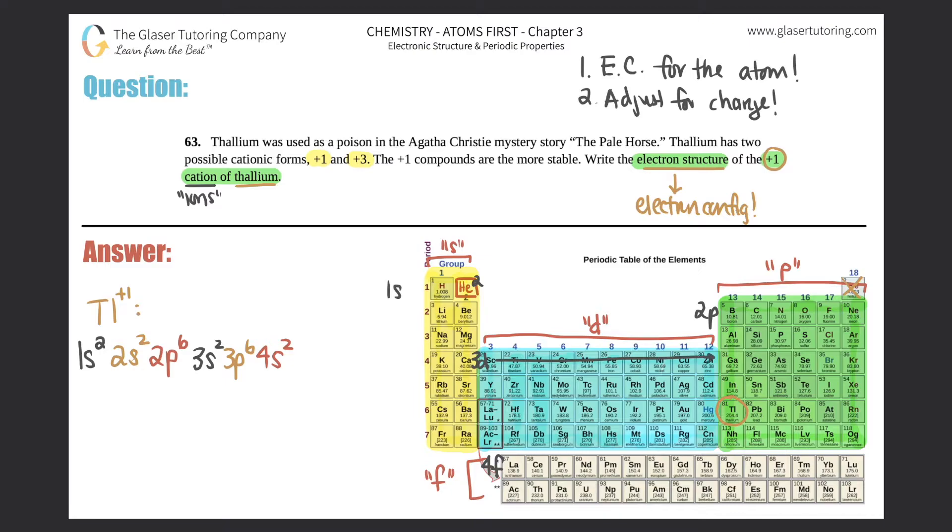Now I'm over at number 31. I got to pass all the way over here because I still need to get down to number 81, so that's 4p⁶. Now I'm down to number 37, I'm going to drop down over here, that's 5s².